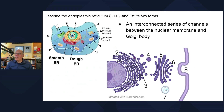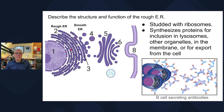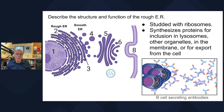The endoplasmic reticulum is an interconnected series of channels between the nuclear membrane and the Golgi body, in two forms: rough and smooth. The rough ER is studded with ribosomes and synthesizes proteins that can be included in lysosomes, other organelles, into the membrane itself, or exported by the cell. Every time you fight off an infection, your B cells build up a lot of rough endoplasmic reticulum because they're producing tons of proteins — antibodies — that get secreted into the blood to fight off the invading pathogen.